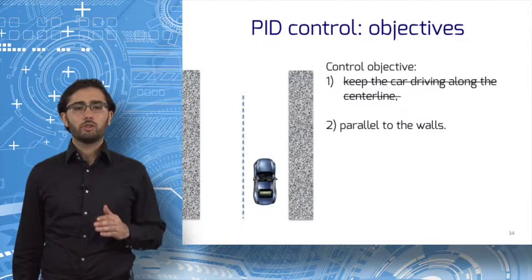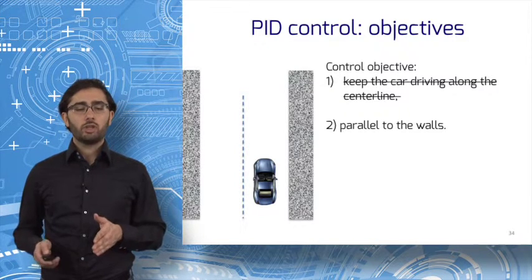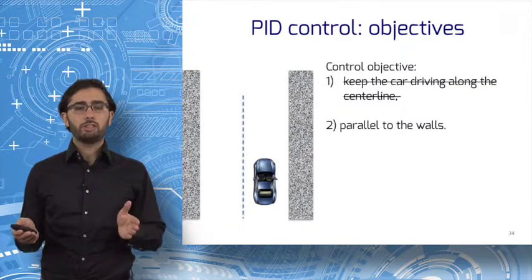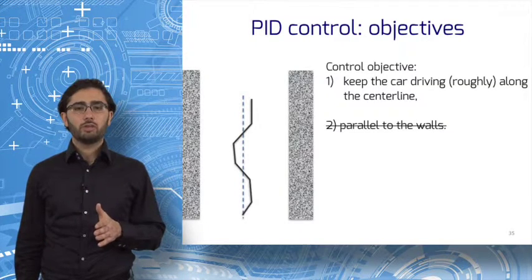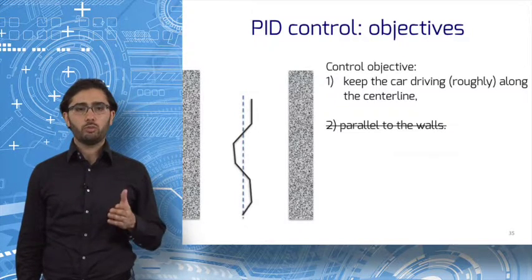Note that the two objectives are not redundant. The car can drive parallel to the walls but not along the center line. And it can drive roughly along the center line but not always parallel to the walls.